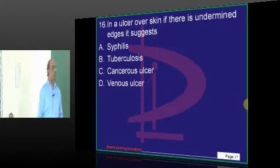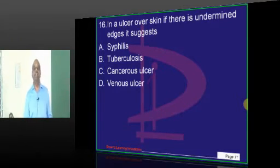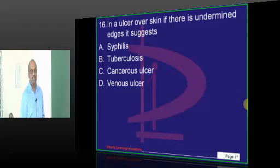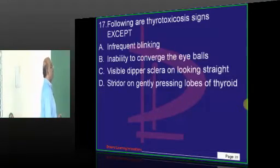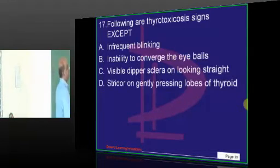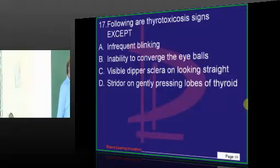If there is an undermined edge for an ulcer, what do you basically call it? It is classical of tuberculosis, where there is undermining of the edge.